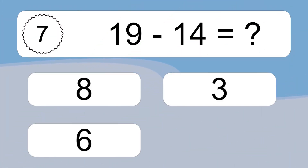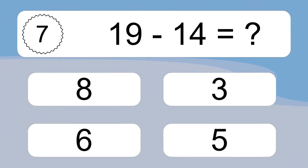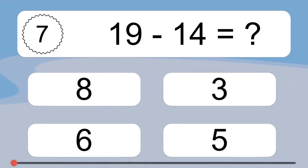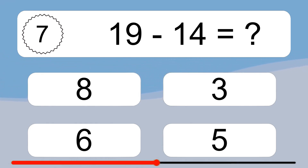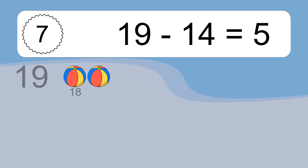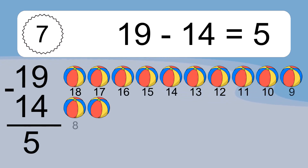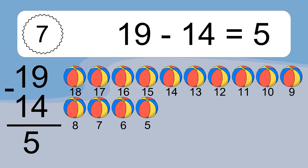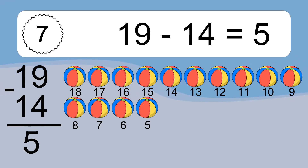19 minus 14 equals what? 19 minus 14 equals 5. Let's count it.